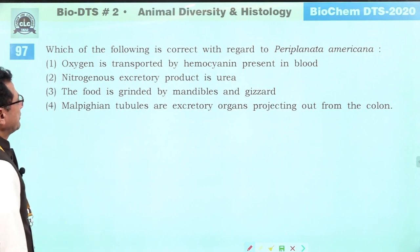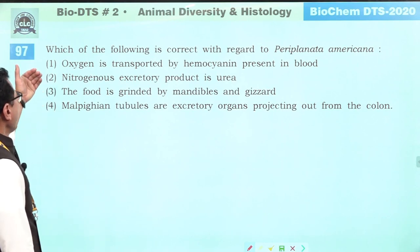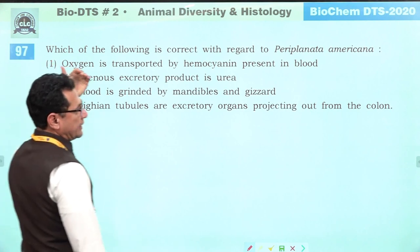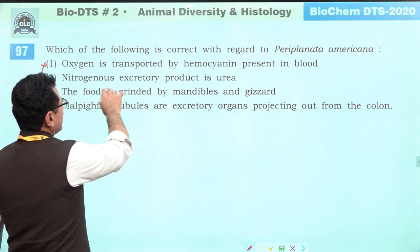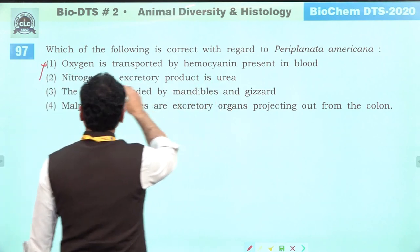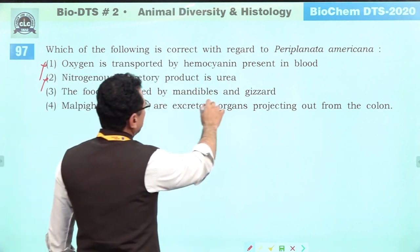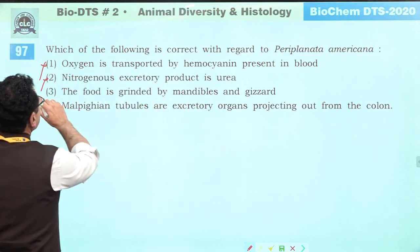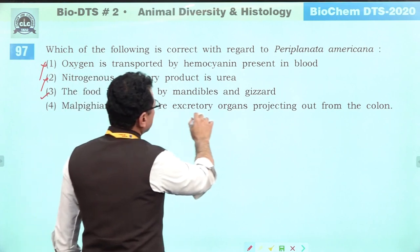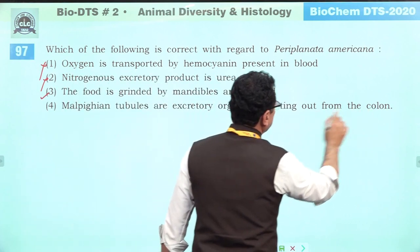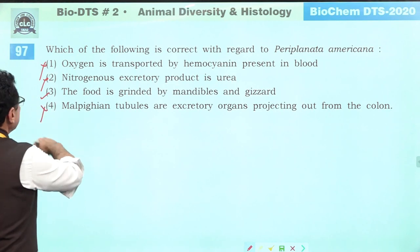Which is correct regarding Periplaneta americana (cockroach)? Oxygen is transported by haemocyanin — incorrect, tracheal respiration occurs. Nitrogenous excretory product is urea — incorrect, it is uric acid. Food is ground by mandibles and gizzard — correct. Malpighian tubules found at junction of mid gut and hind gut — correct. Answer is three.